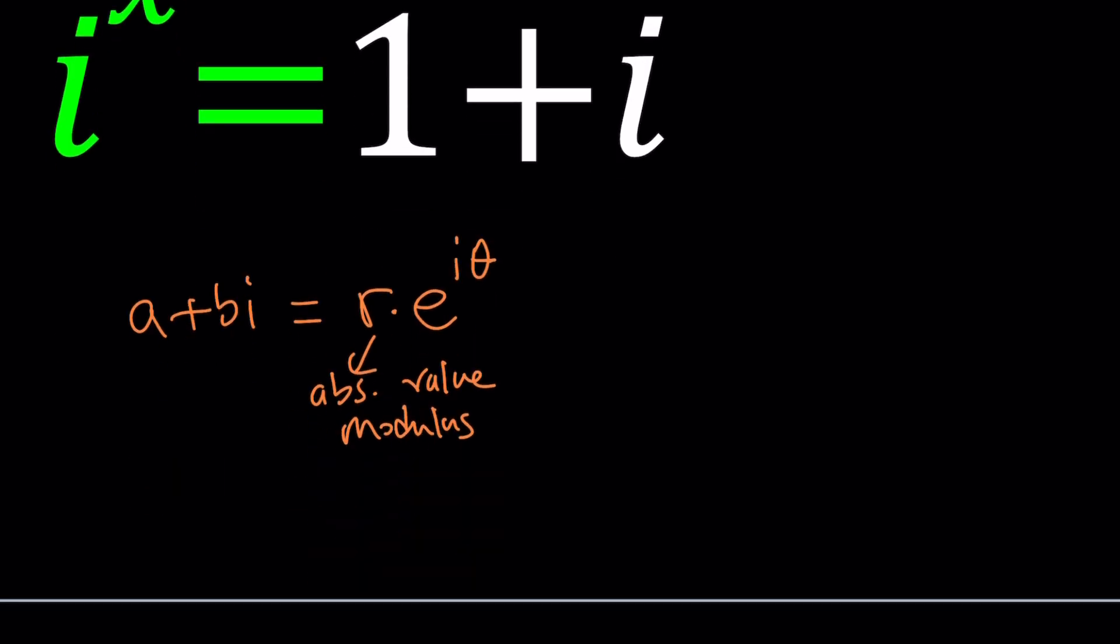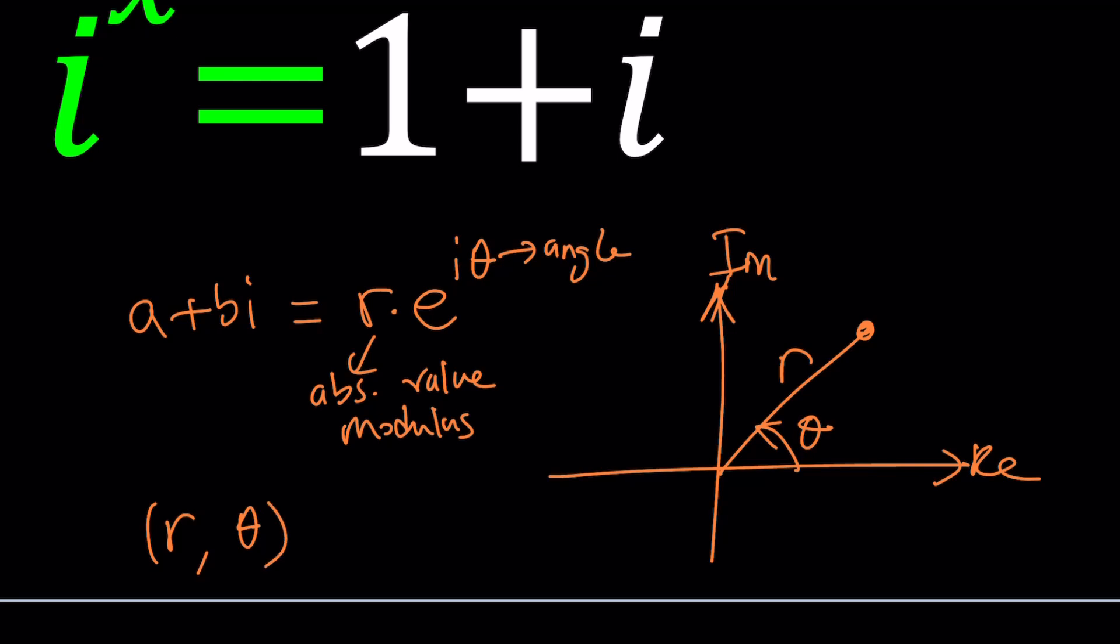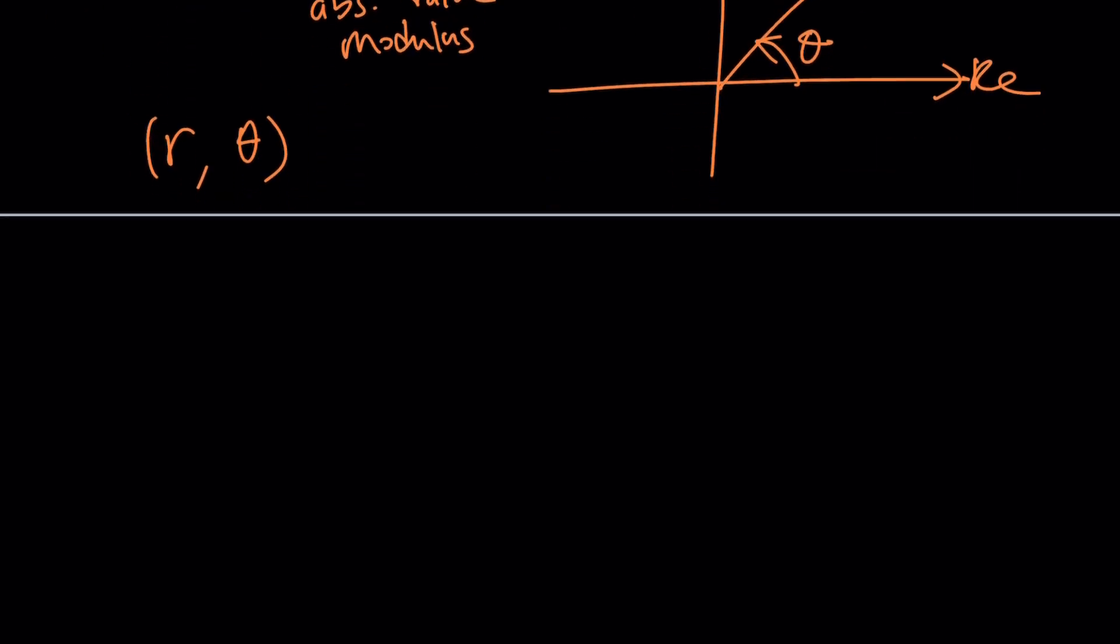And theta is the angle that it makes with the x-axis. So this is an angle. Let's see how this works. If you have a complex number like this, this is the imaginary axis and this is the real axis. It makes an angle of theta and its modulus is r. So we have to determine two things, r and theta, so we can write it in polar form. That's what determines that complex number.